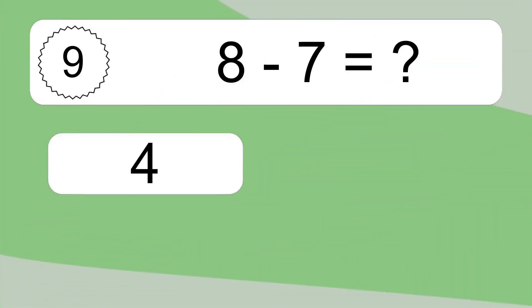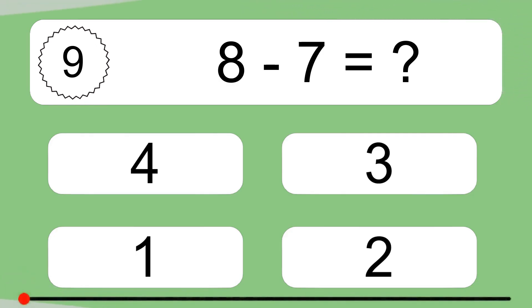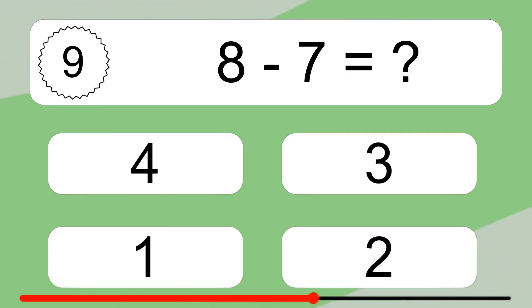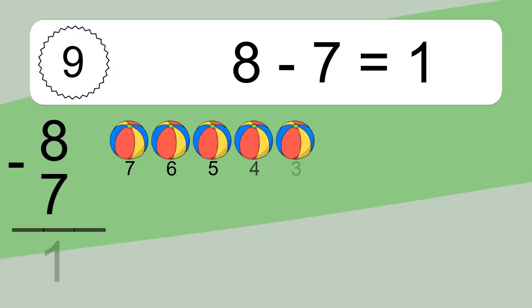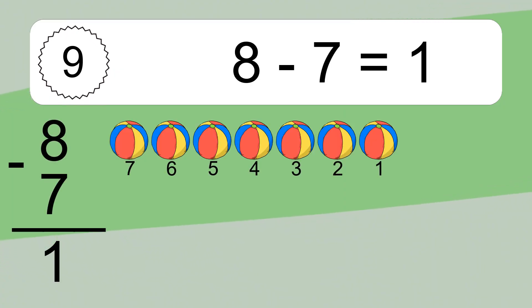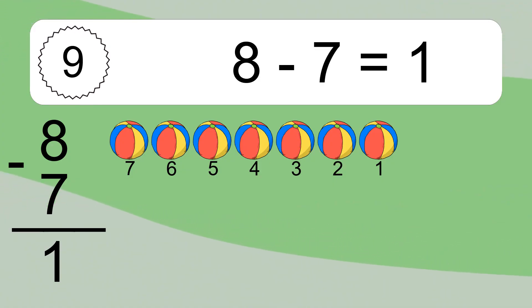8 minus 7 equals what? 8 minus 7 equals 1. Let's count it. 7, 6, 5, 4, 3, 2, 1.